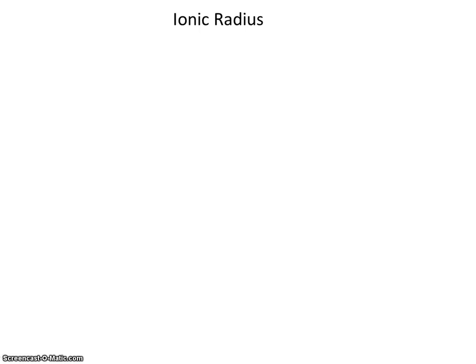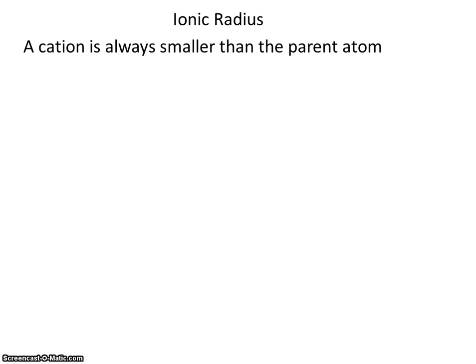We've already studied atomic radius. Now let's look at ionic radius. You'll recall that an ion is an atom that has lost or gained an electron. A cation is always smaller than the parent atom. Remember, the cation is a positive ion.